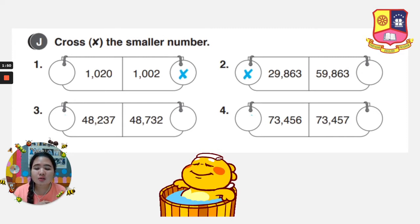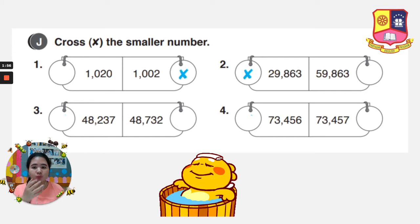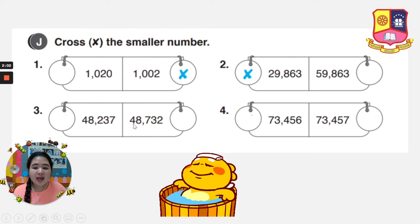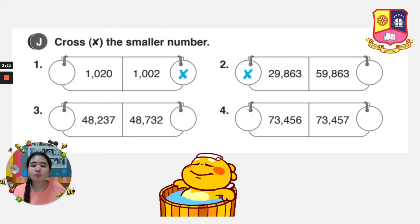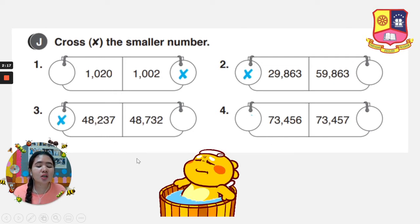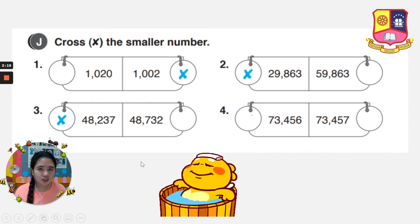Let's go to number 3. We have 48,237 and 48,732. Let's compare: 4 and 4, the same; 8 and 8, the same; 2 and 7 — which one is smaller? 2 or 7? The answer is 2, so 48,237.